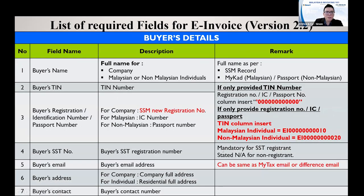For buyer details, you need the customer's full name or company name as per SSM records — make sure it is the full name, not a short form. For Malaysian individuals, follow the name as stated on the IC or passport exactly. You also need the TIN number. If you do not have their SST number, you can key in the general number 000000000.